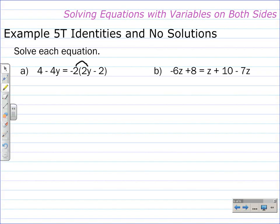In part A of example 5T, we first need to distribute this negative 2. Negative 2 times 2y is negative 4y. Negative 2 times minus 2 is plus 4. And we bring down the left-hand side, 4 minus 4y. Well, this actually should be minus 4y here.